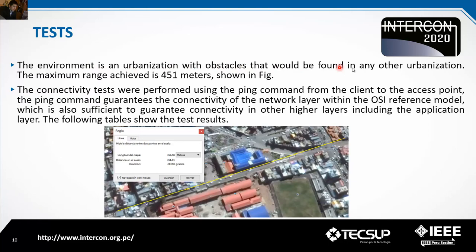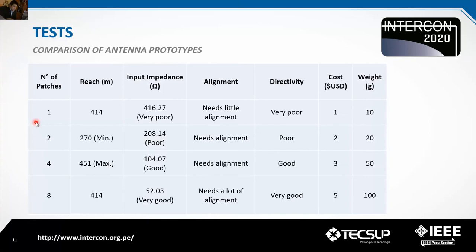The environment is an urbanization with obstacles typical of any urban area. The maximum range achieved is 451 meters, shown in the figure — the yellow line marks the maximum reach. Connectivity tests were performed using the ping command and the ICMP protocol, which guarantees connectivity at the network layer within the OSI reference model, sufficient to guarantee connectivity at higher layers including the application layer.